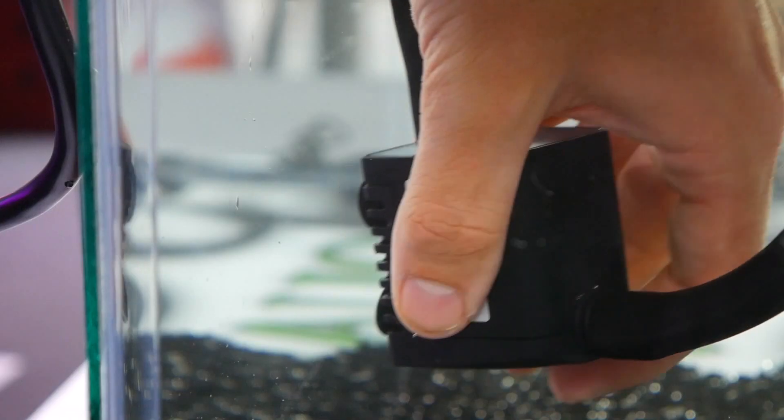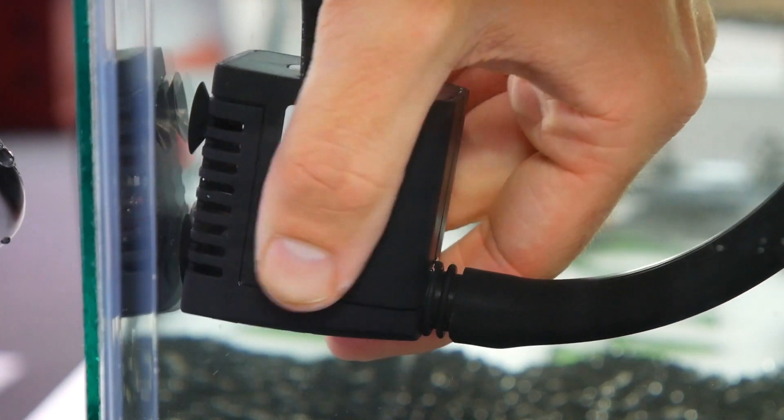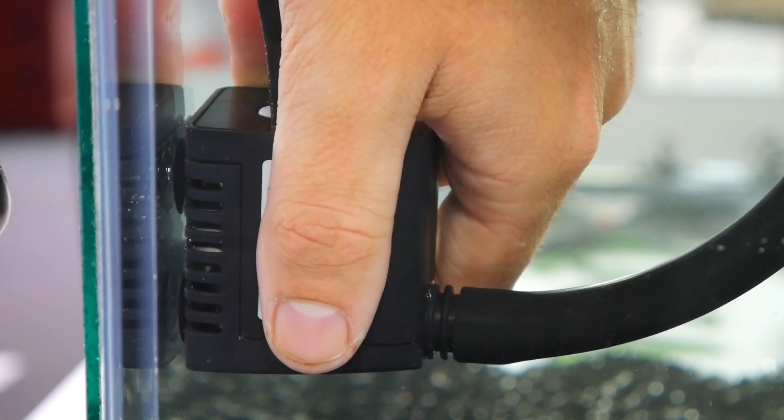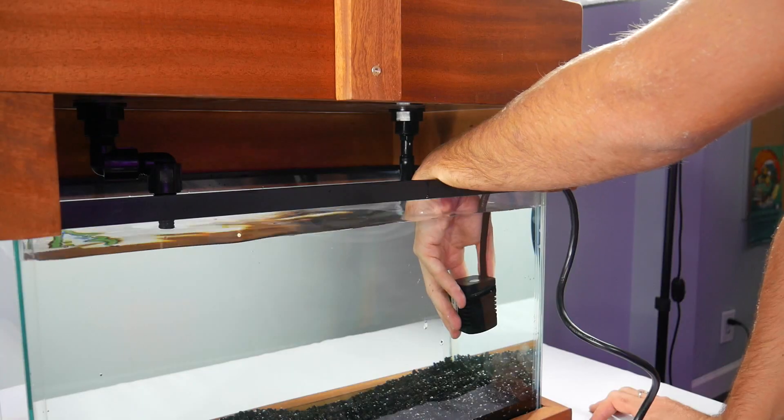What I like to do is suction cup it to the wall or suction cup it to the floor and this really ensures that it's not going to move around, it's not going to get in the way of anything, and you can always hide it with tank decorations.